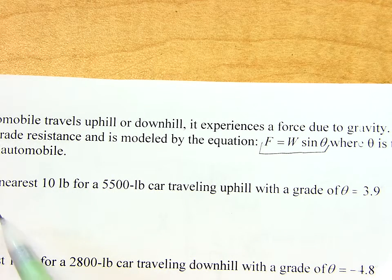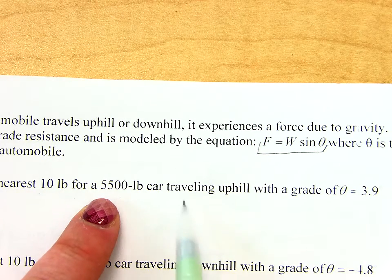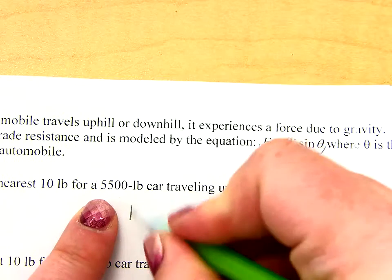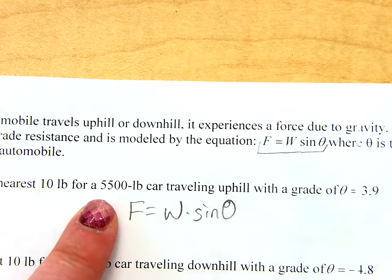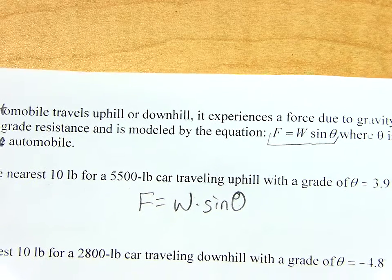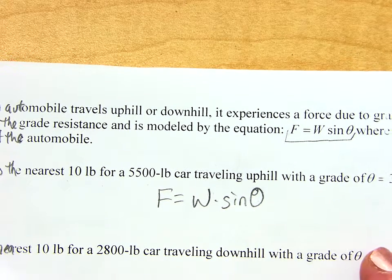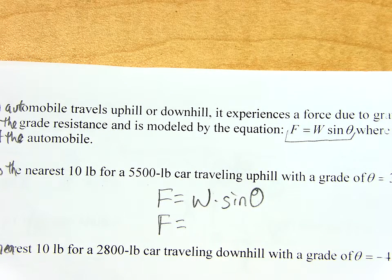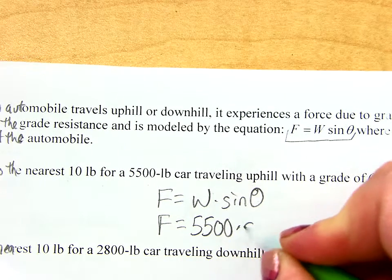So on 3A, they want me to calculate F to the nearest 10 pounds for a 5,500 pound car traveling uphill with a grade of theta equals 3.9. So watch how easy this is. I take my formula, F equals W times sine theta. Do I know what the force is?